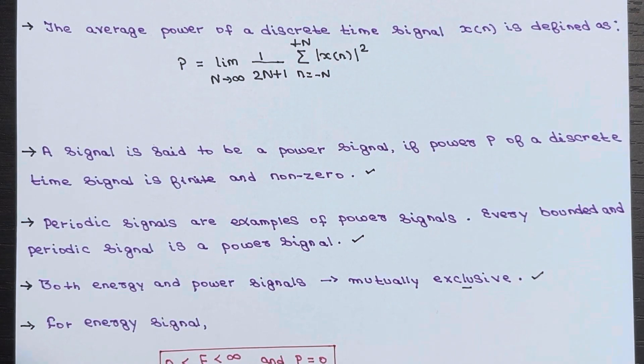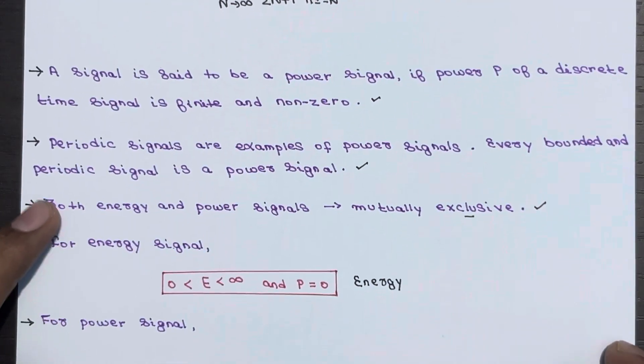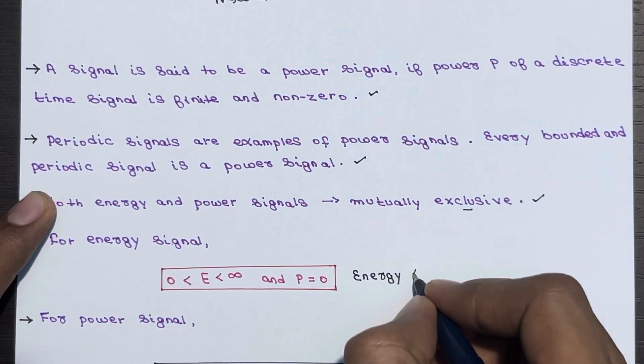For energy signals, the energy will be finite, meaning 0 < E < infinity, and average power will be 0. This is the condition for energy signals.